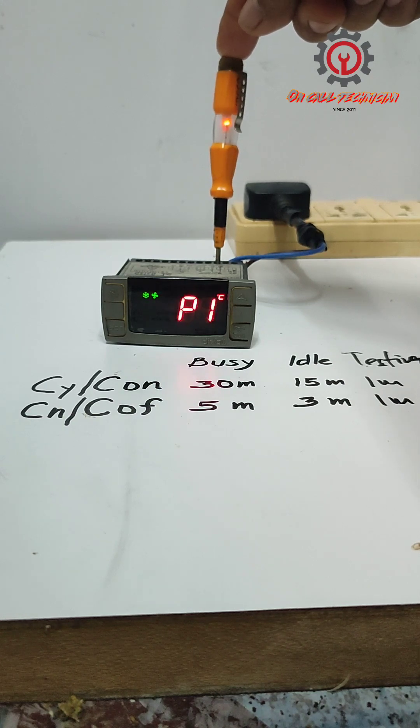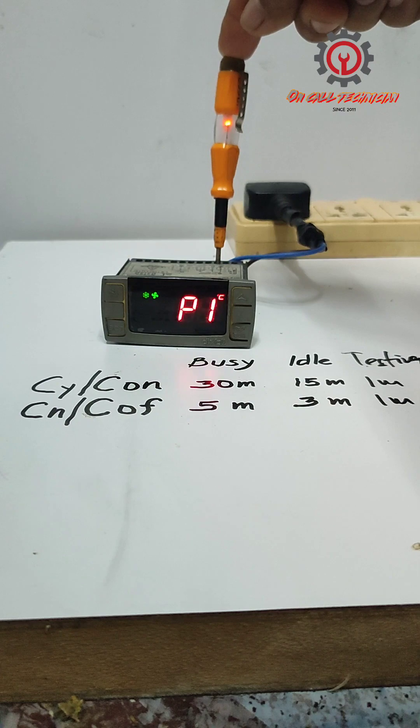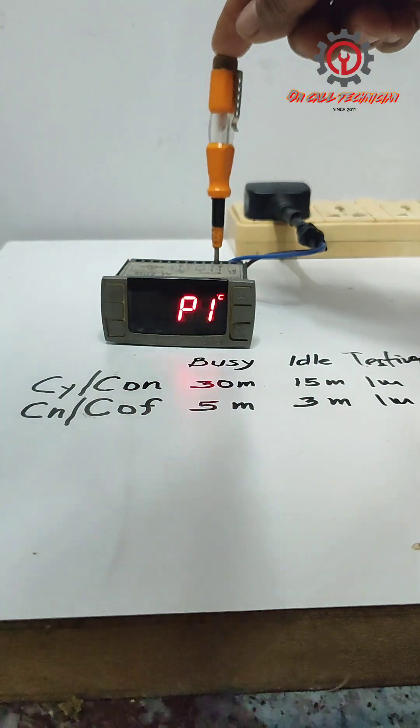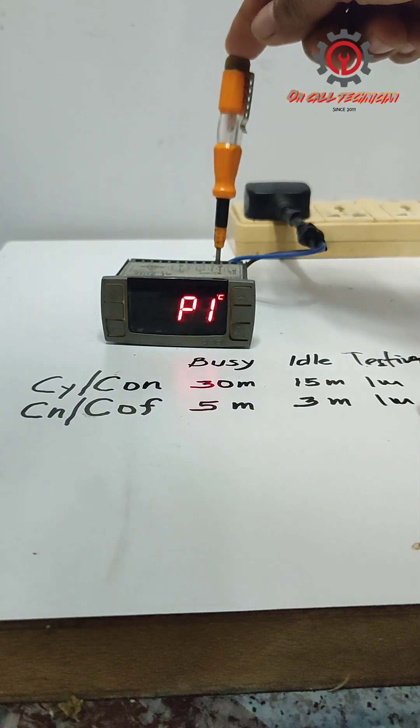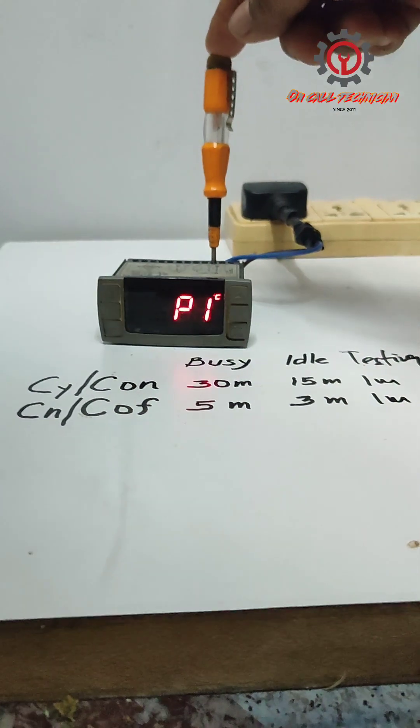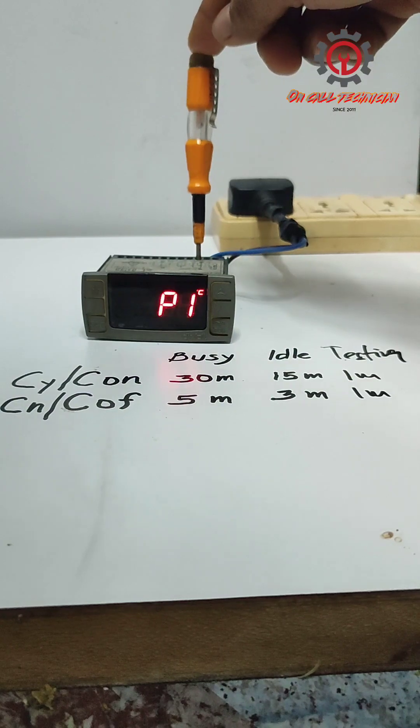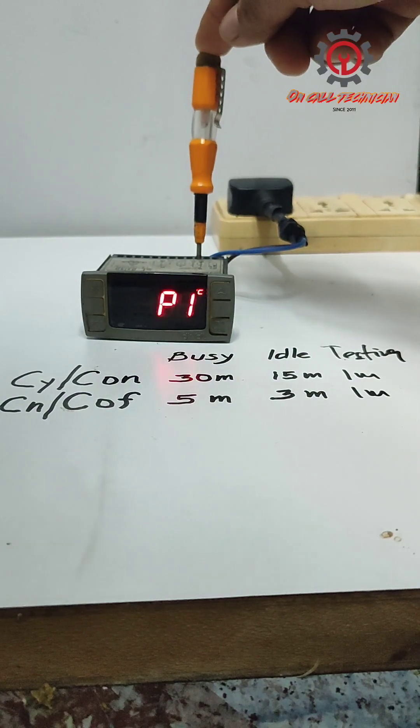My test pen is on terminal number three proving the compressor is engaging. See, cut off after one minute count. Count one minute again and the compressor and fan motor will engage again.